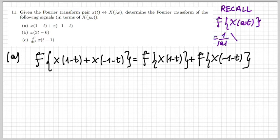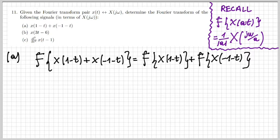Let's recall what happens when I have scaling in the time domain. When I do the Fourier transform of something like x of a·t, where a is a constant that provides linear scaling, I obtain one over the magnitude of a as a linear multiplication factor, and then the Fourier transform is scaled in its variable ω — so it's X(jω/a). We're going to apply this now because, as you can see, the signal x is shifted in time but also flipped — it's a function of minus t — so it's like having a scaling with a equal to minus one.